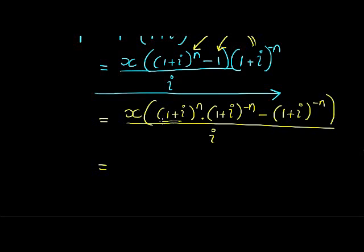(1+i) times (1+i), which means I can add the exponents. But if I add the exponents, n minus n gives me 0, and anything to the power of 0 is just 1. So I have just 1 minus (1+i)^(-n) over i.